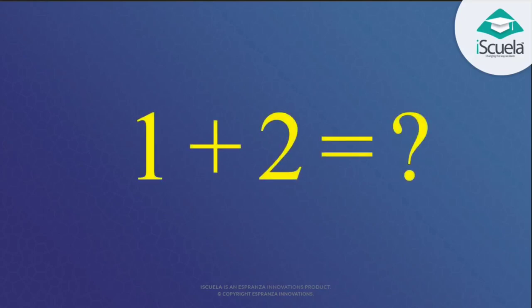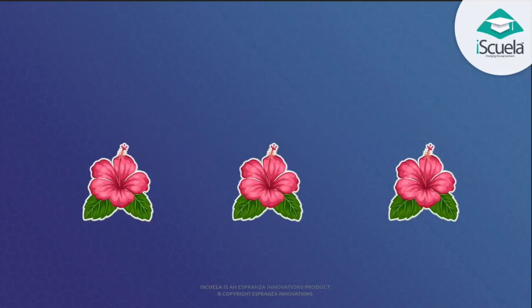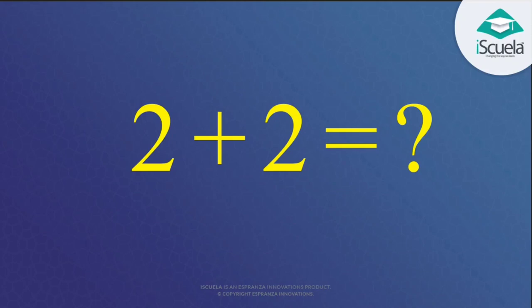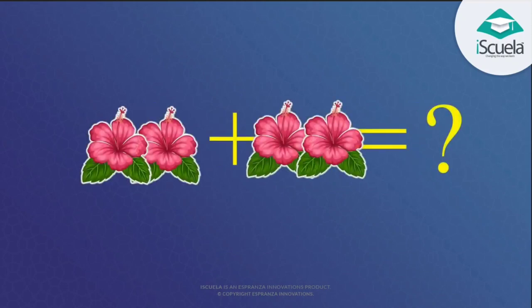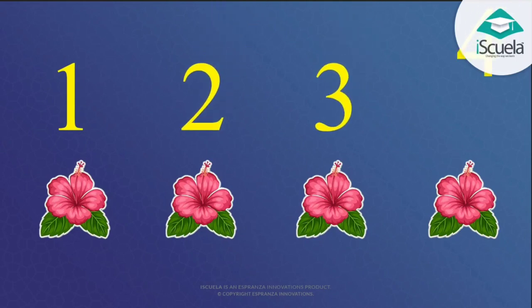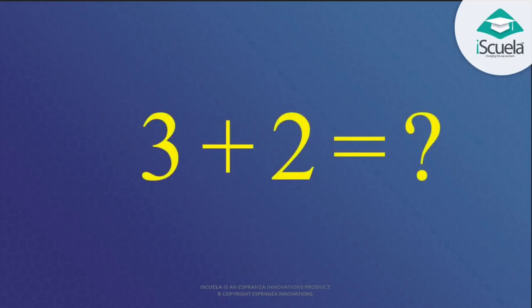1 plus 2 is equal to what? 1 plus 2 — count these numbers: 1, 2, 3. So 1 plus 2 is equal to 3. Now, 2 plus 2 is equal to what? 2 plus 2 — start counting, children: 1, 2, 3, 4. So 2 plus 2 is equal to 4.